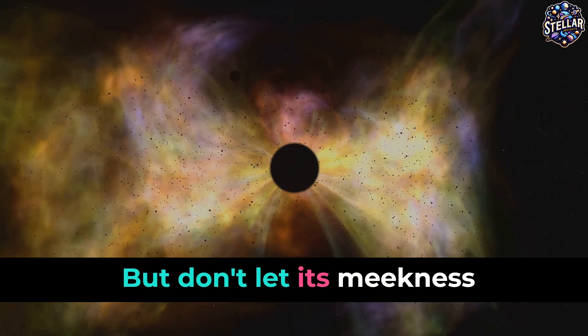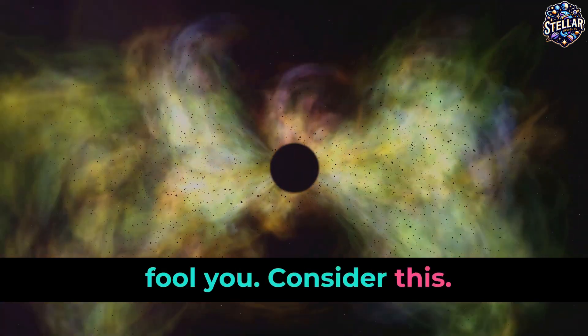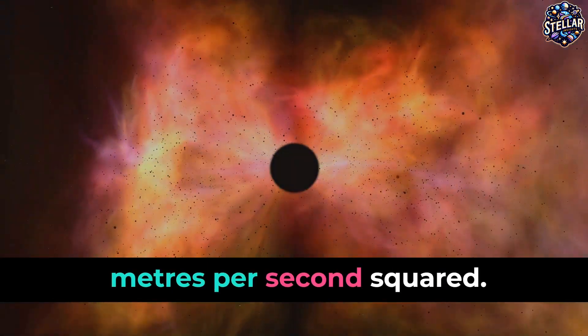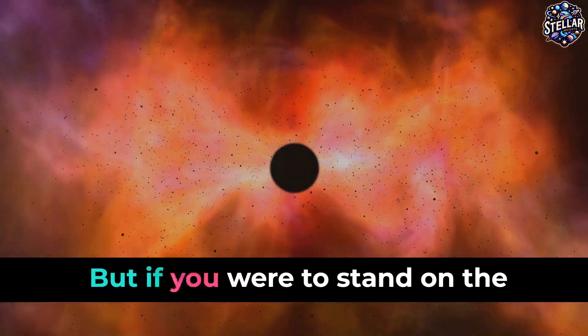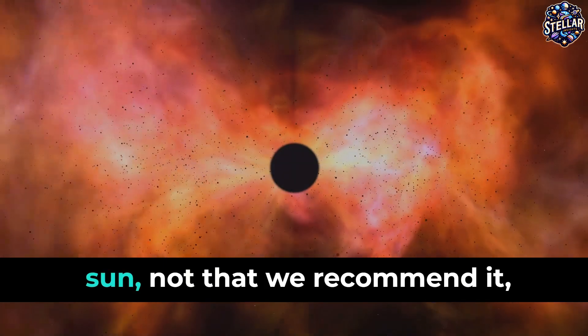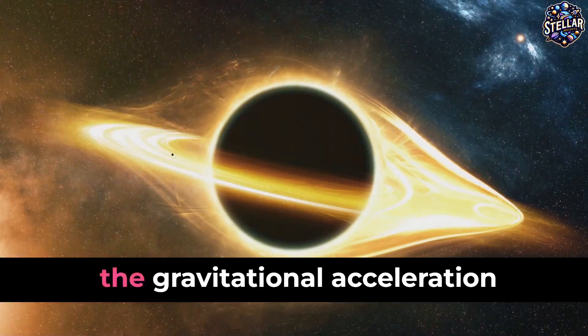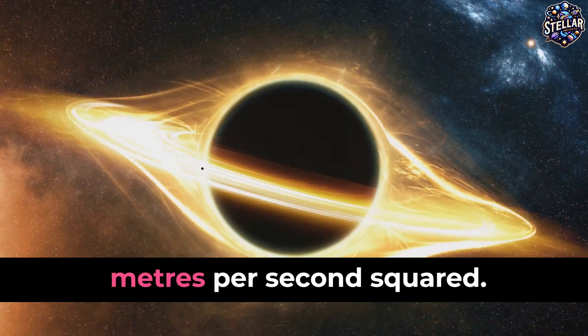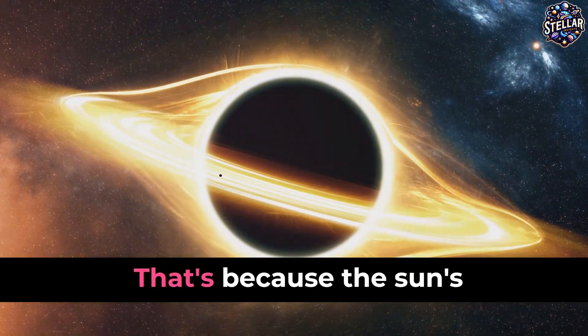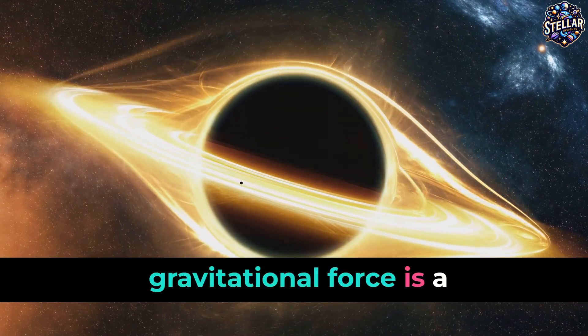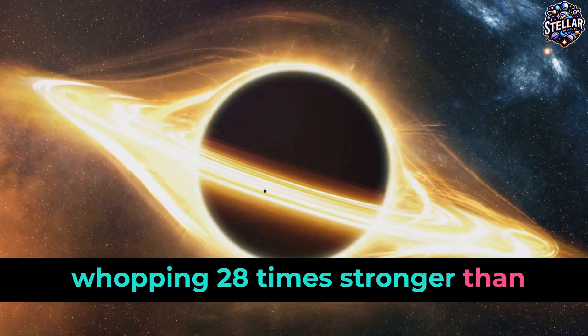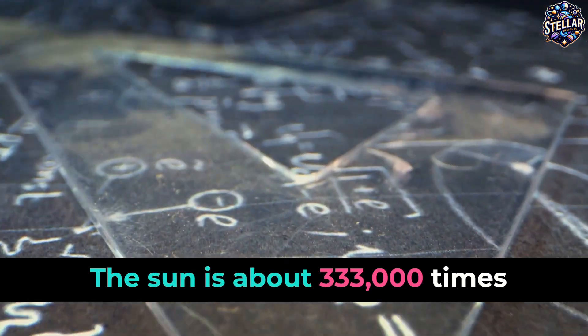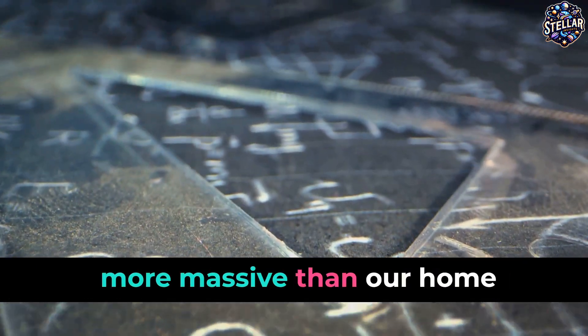But don't let its meekness fool you. The acceleration due to gravity on Earth's surface is about 9.81 meters per second squared. But if you were to stand on the sun, not that we recommend it, the gravitational acceleration would rocket up to about 274 meters per second squared. That's because the sun's gravitational force is a whopping 28 times stronger than Earth's. It's all down to mass. The sun is about 333,000 times more massive than our home planet.